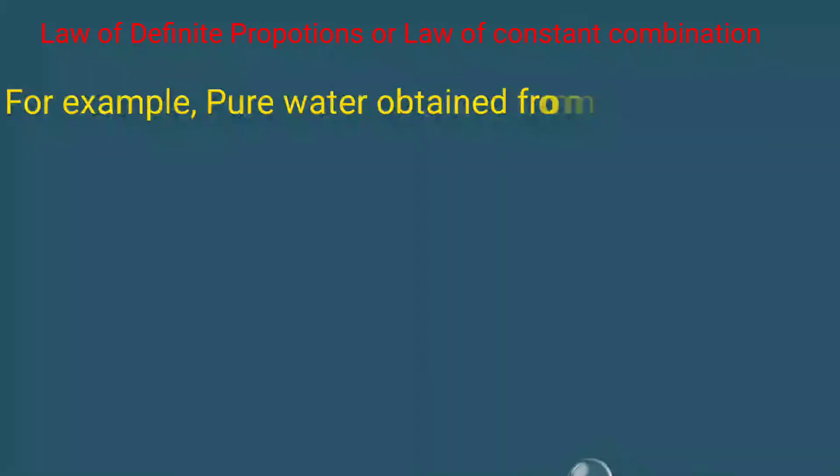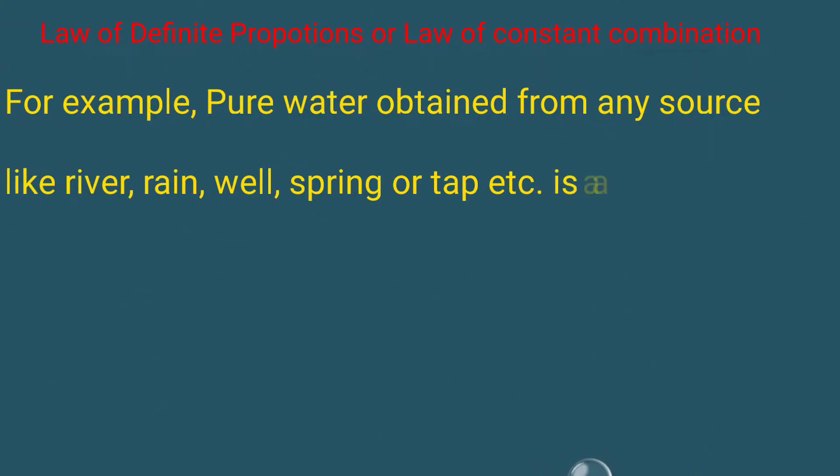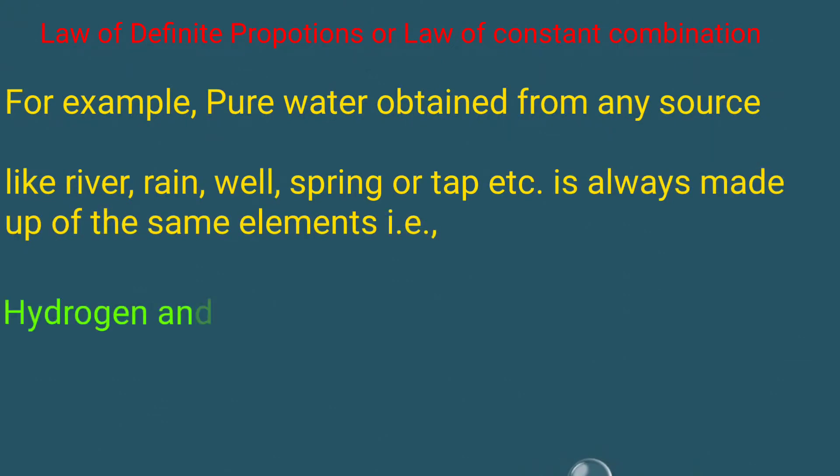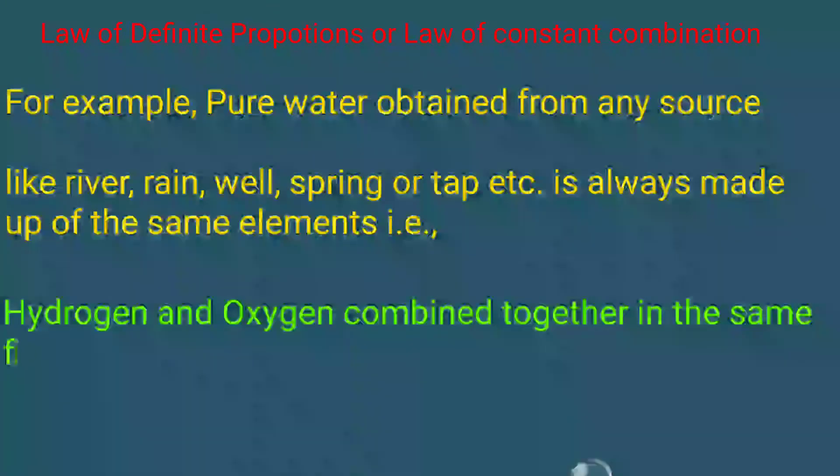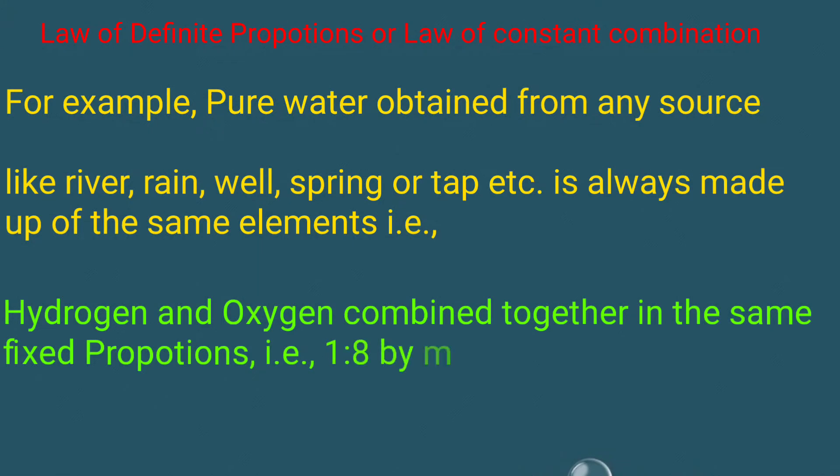For example, pure water obtained from any source like river, rain, well, spring, or tap is always made up of the same elements, hydrogen and oxygen, combined together in the same fixed proportion, that is 1 ratio 8 by mass.